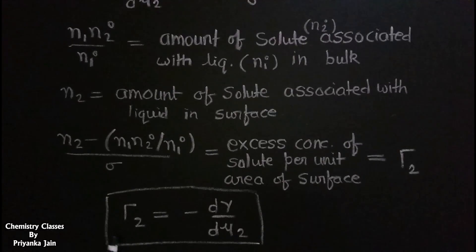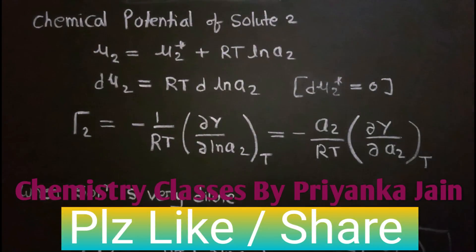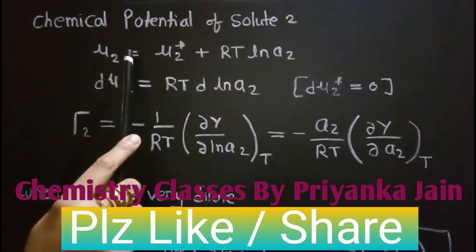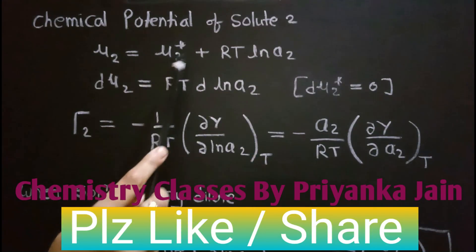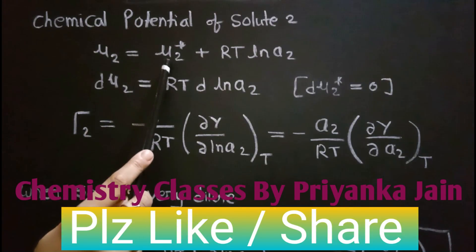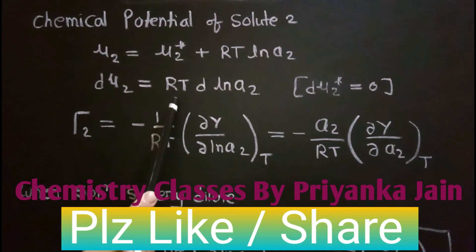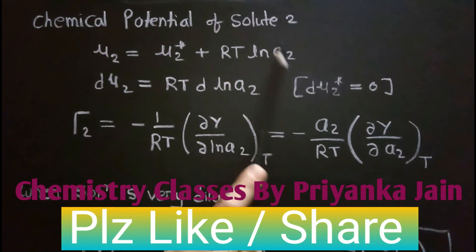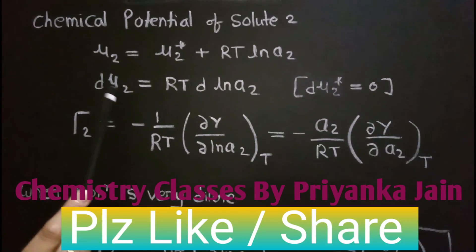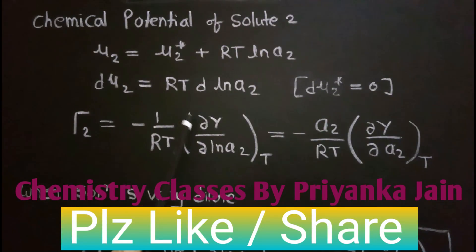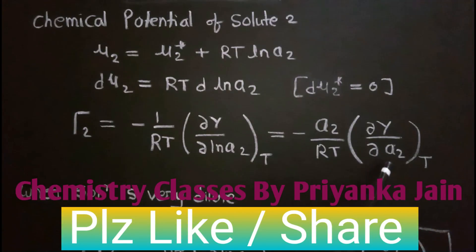The chemical potential of the solute is given by μ₂ = μ₂* + RT ln(a₂), where μ₂* is the chemical potential of the pure solute and a₂ is activity. Differentiating gives dμ₂ = RT d(ln a₂), since dμ₂* = 0. Substituting into the expression for Γ₂ gives: Γ₂ = −(1/RT) · dγ/d(ln a₂) at constant T, which can also be written as: Γ₂ = −(a₂/RT) · dγ/da₂ at constant T.